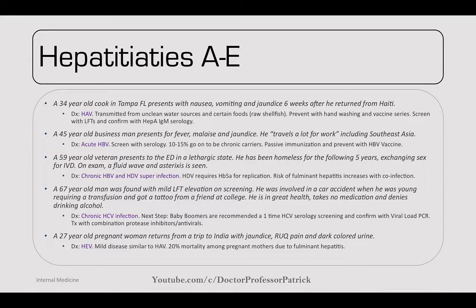Hepatitis A through E. A 34-year-old cook in Tampa presents with nausea, vomiting, and jaundice six weeks after returning from Haiti — hepatitis A virus, transmitted from unclean water and raw shellfish. Prevent with handwashing and vaccine series. Screen with LFTs; confirm with hep A IgM acutely. Can cause fulminant hepatic failure especially in those with hep B or C. A 45-year-old businessman with travel to Southeast Asia and promiscuous sex presents with fever, malaise, and jaundice — acute hep B. Screen with serologies; 10-15% of acute cases become chronic carriers. Prevent with hep B vaccine series.